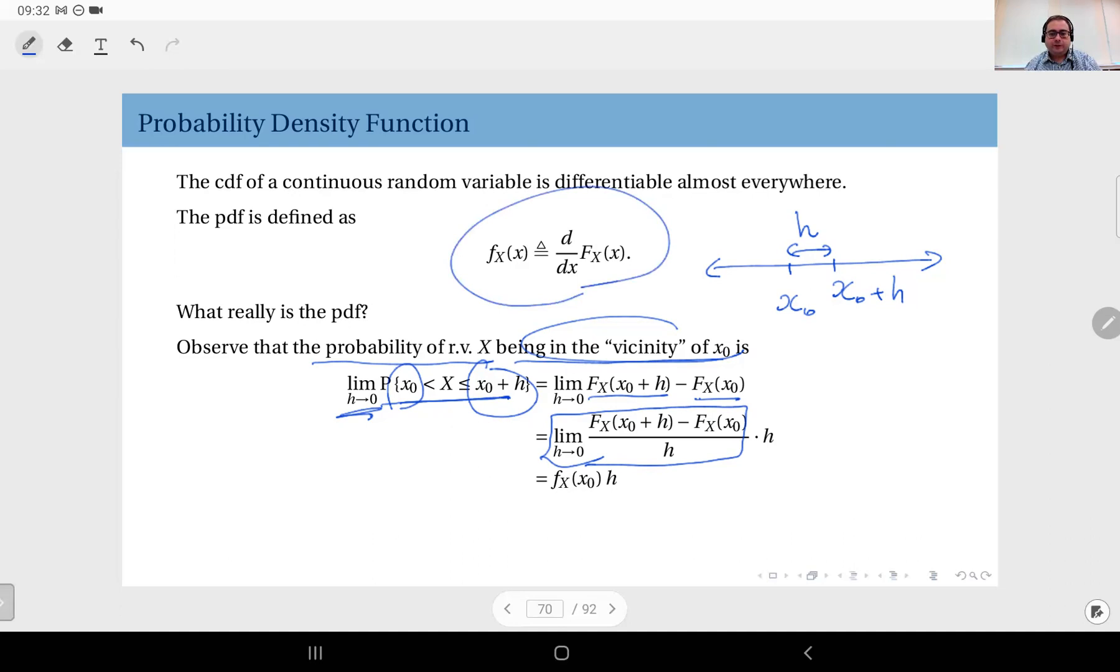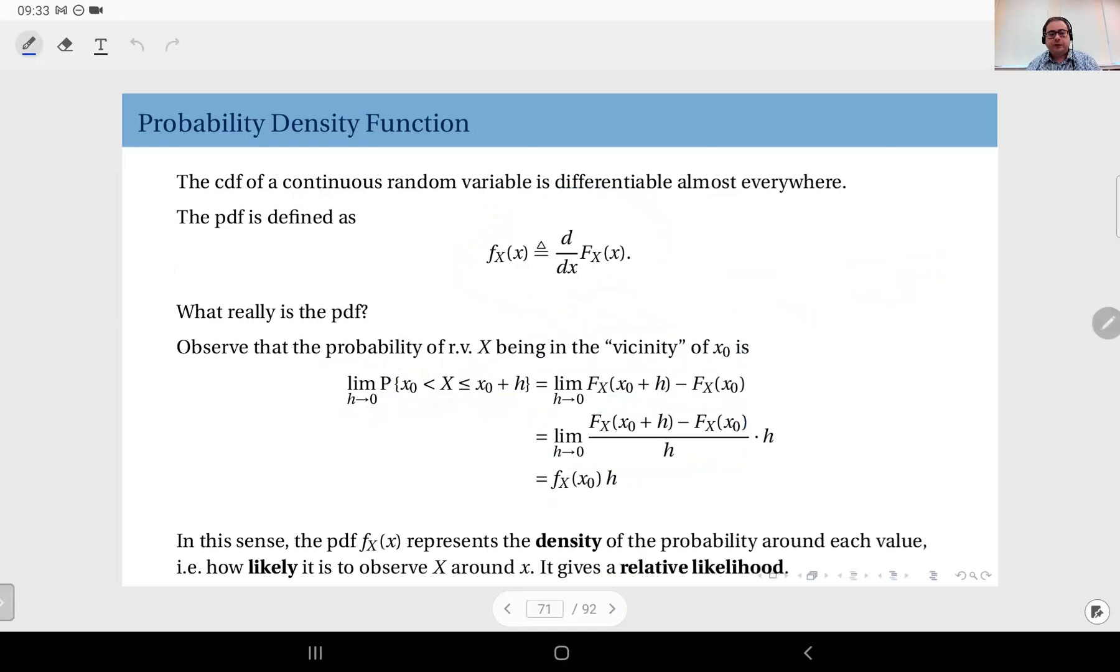So the probability of the random variable X being in the vicinity of x_0 is proportional to the PDF value of random variable X at that point. So what this means is the PDF represents the density of the probability around each possible value, and this actually means how likely it is to observe random variable X around parameter x.